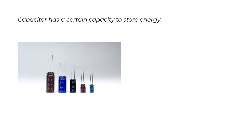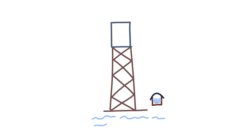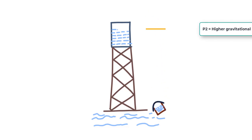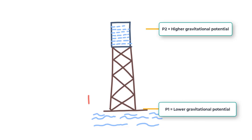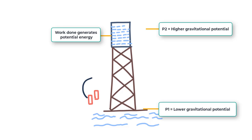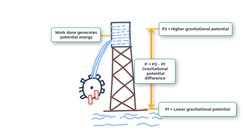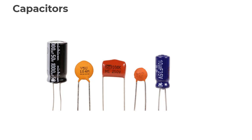Every capacitor has a certain capacity to store energy, and this is termed its capacitance. Before we go ahead, it's worthwhile to draw a quick comparison of stored electrical energy with gravitational energy — the energy you can store in an overhead tank by carrying buckets of water. You are doing work taking the water up to a higher gravitational potential, resulting in potential energy that can later be used to run a turbine and generate electricity when desired.